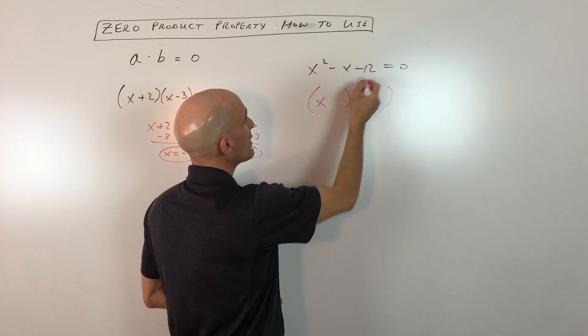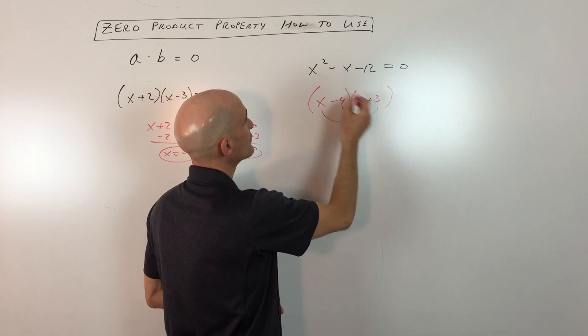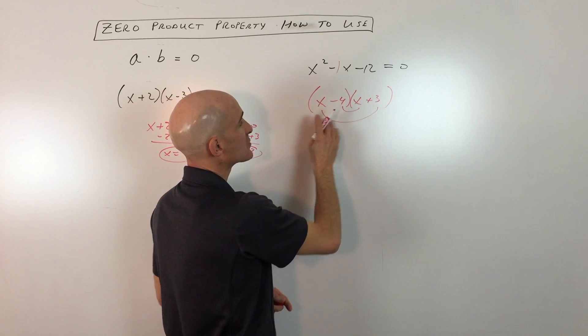What multiplies to negative 12? That's negative four and positive three. Let's double check: negative four x and positive three x, that's negative one x, right? And x times x is x squared.